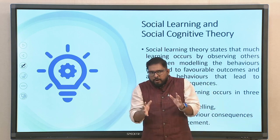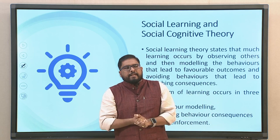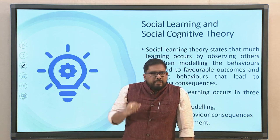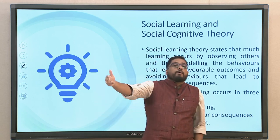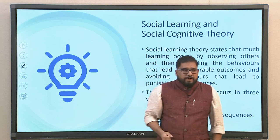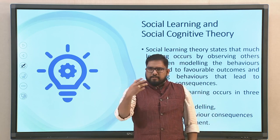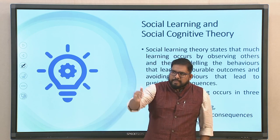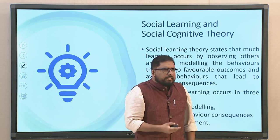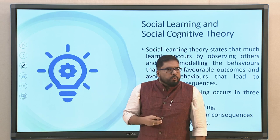Avoiding behaviours that lead to punishing consequences is common sense. We observe an individual within our organisation — for example, we see that an individual is getting awarded or recognised for a certain level of work. So we tend to model that individual and recreate their performance. Conversely, when a teammate is reprimanded by a boss for something, we tend to stay away from that task. This is social learning theory — observational learning — and we should be thankful to Albert Bandura for bringing the social element into learning.